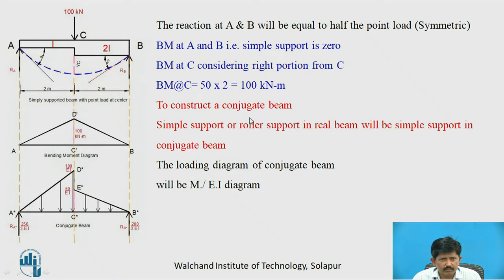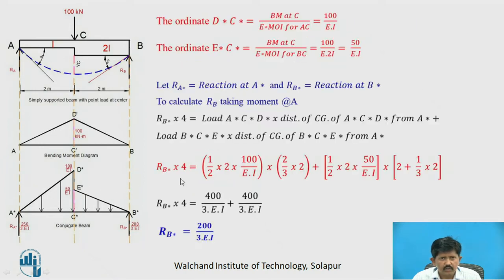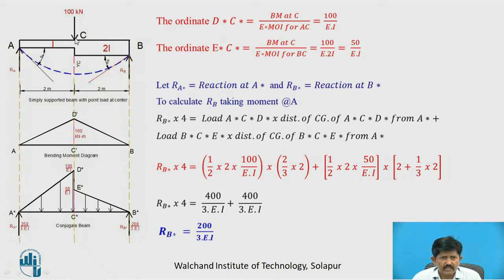To construct the conjugate beam, simply supported or roller supports in the real beam become simple supports in the conjugate beam. The loading diagram will be the M upon EI diagram. Since there is a sudden change in cross-section at C, the ordinate D*C* (for the left portion AC) equals bending moment at C divided by E into I of AC, that is 100 upon EI. The ordinate C*E* (for the right portion BC) equals bending moment at C divided by E into 2I, that is 50 upon EI.